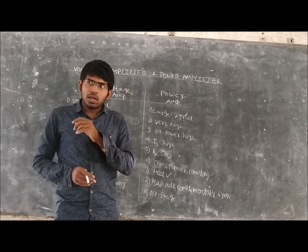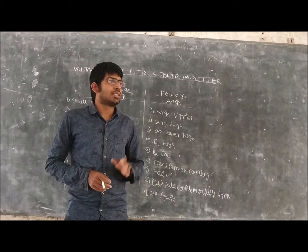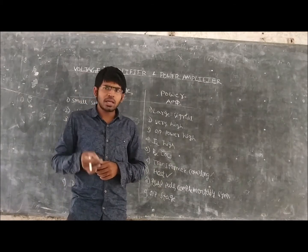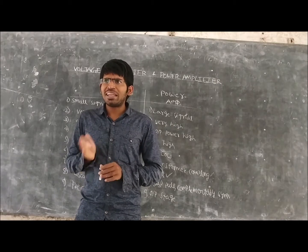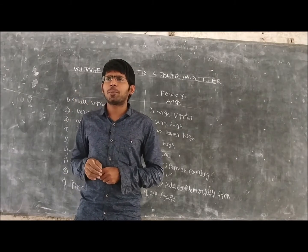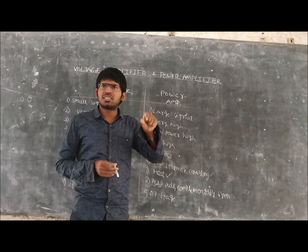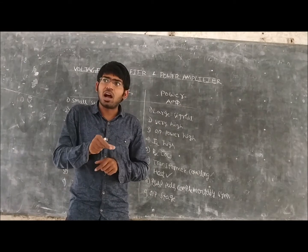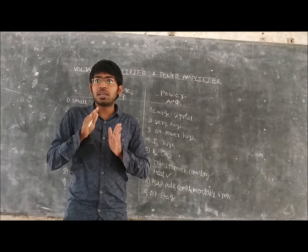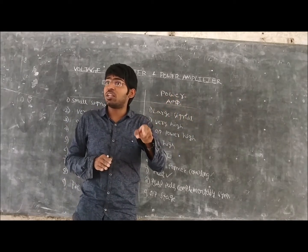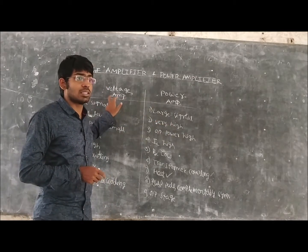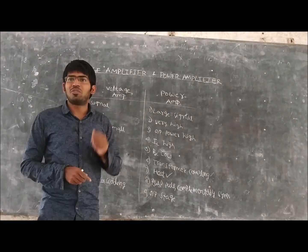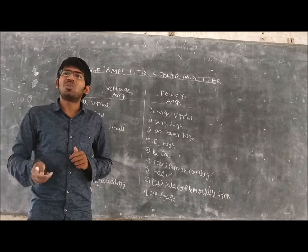We have already discussed voltage amplification and the necessity for a power amplifier. A question may arise: what is the exact difference between a voltage amplifier and a power amplifier? The voltage amplifier amplifies a signal that has a very low voltage, whereas the power amplifier amplifies a signal that already has a high voltage. This is why the voltage amplifier is called a small signal amplifier and the power amplifier is called a large signal amplifier.